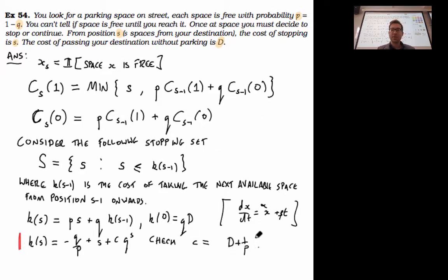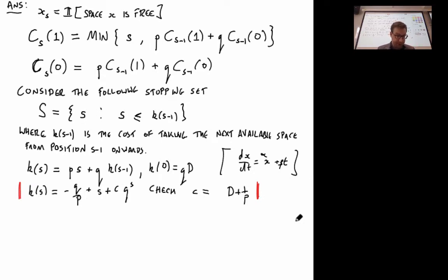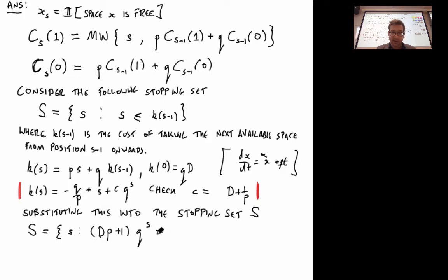So substitute this into the stopping set. We'll find that actually, we end up with the condition - this s will cancel with this s, and we'll be left with the following condition, that D over p plus one times q to the s has to be bigger than one. That will be the condition I get from rearranging this expression.